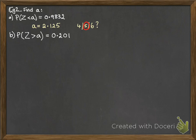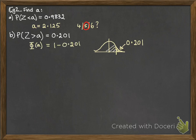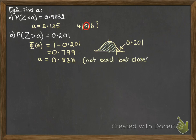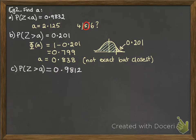Now we'll have a look at a greater-than type of question. P(z > a) = 0.201. Let's draw a picture of what that looks like — the region greater than a giving us 0.201. We know it's on the right-hand side because it has to be less than half of the distribution. So φ(a) will be 1 minus 0.201, which gives us 0.799, and that we can now look up on our table. You'll see that it doesn't give us the exact answer, but it's the closest one to 0.799.